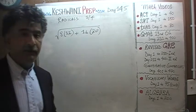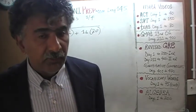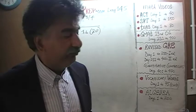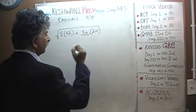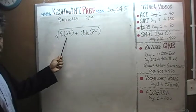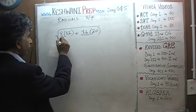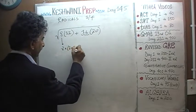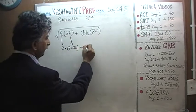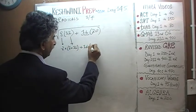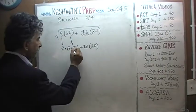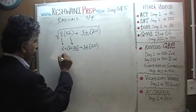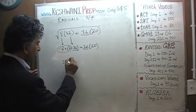Among the four quantities presented, do we notice any perfect square? The answer is yes — 16 is a perfect square. We need to get a 16 out of 32, so we write 32 as 2 times 16. So we have 8 times 2 times 16 plus 16 times 20. Now we can take 16 as a common factor.